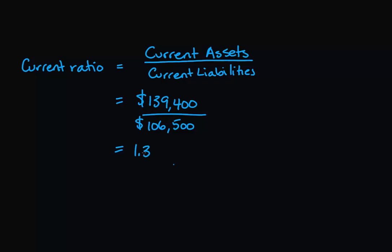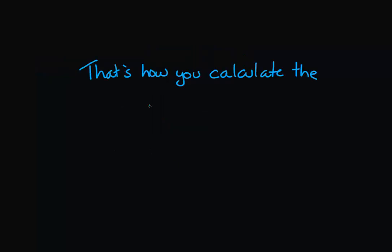And if a current ratio is decreasing, it means that current assets are decreasing in proportion to current liabilities. So there's two things happening in this ratio. And that's how you calculate the current ratio. Thanks for watching everyone.